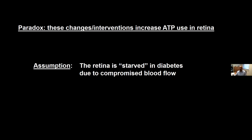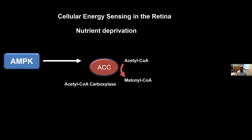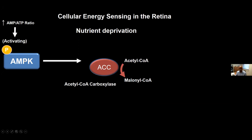Our group wanted to address this assumption by looking at intrinsic cellular fuel sensors in diabetes. I want to focus on a central metabolic axis contained in nearly all mammalian cells, controlled by the master kinase known as AMP-activated kinase, or AMPK. In conditions of nutrient deprivation, there is a relative increase in the AMP:ATP ratio. This enzyme is directly responsive to that ratio and becomes phosphorylated in response to the elevated AMP:ATP ratio. Phosphorylation of AMPK is an activating event.